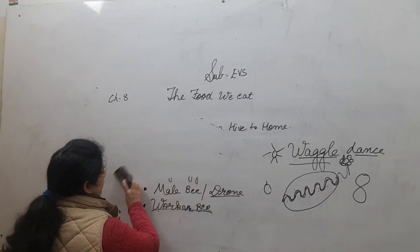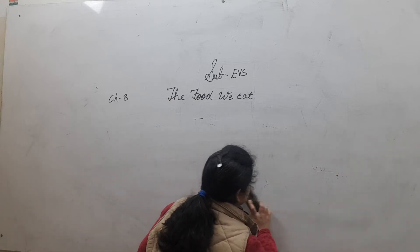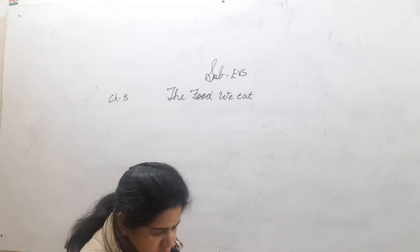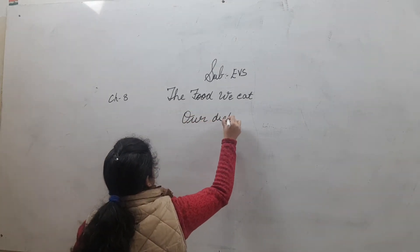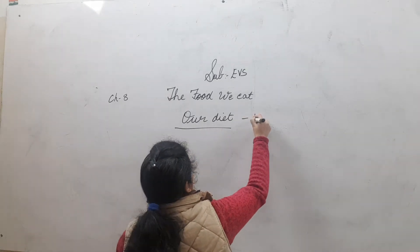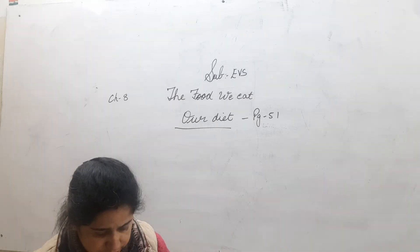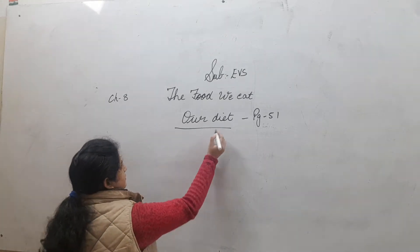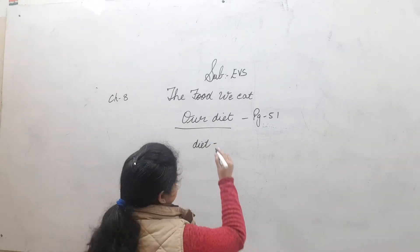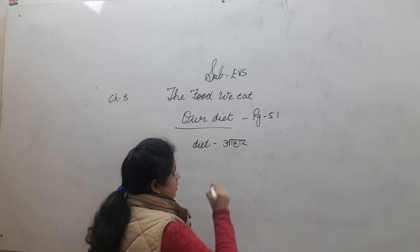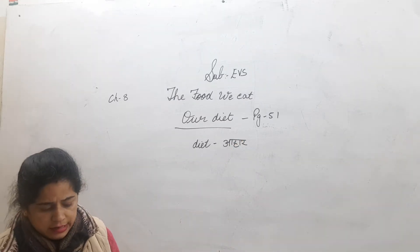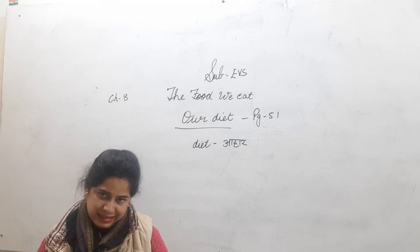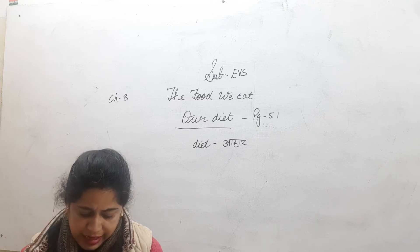Today we will continue with the new concept — the third topic is our diet. So the next topic is our diet. Take out page number 51 of your book. Now read behind me: we eat a variety of things every day.